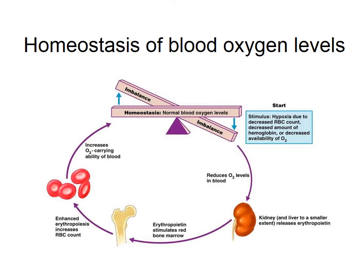Normally this process would occur at the same pace as red blood cell destruction. Although, as mentioned earlier, if needed, red blood cell production can occur more rapidly. This is because erythropoiesis occurs in a feedback loop. If there is a decrease in the oxygen carrying capacity of blood, this is known as hypoxia.